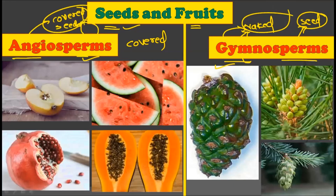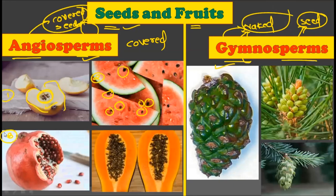In day-to-day life, we observe how angiosperms have covered seeds. In the apple, there is fruit outside while the seeds are inside — the seeds are protected inside the fruit. The same is true for watermelon, where many seeds are protected inside the large fruit. Similarly, in pomegranate many seeds are covered inside the fruit, and in papaya a large number of seeds are present inside the fruit.